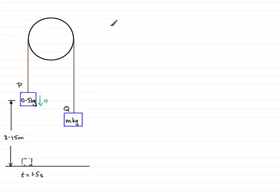So in order to find the acceleration of p as it moves the 3.15 meters, what I'm going to do in part a is to consider the suvat type equation.